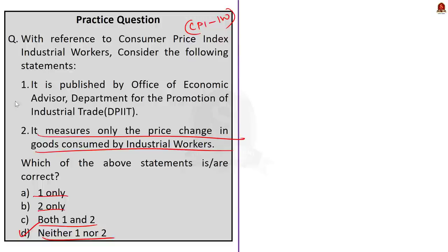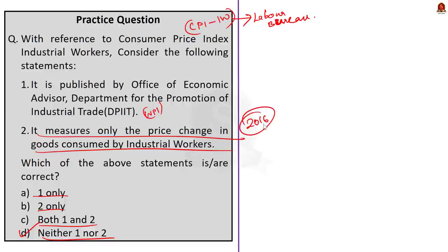CPI-IW, or the Consumer Price Index for Industrial Workers, is published by the Labour Bureau under the Ministry of Labour. The Office of Economic Advisor under DPIIT releases the WPI, that is the Wholesale Price Index. The second statement is also incorrect because CPI-IW measures both the price change in goods and services consumed by industrial workers. Recently, the base year for calculating CPI-IW was revised to 2016 — make note of this, very important. The correct answer is option D, neither 1 nor 2.